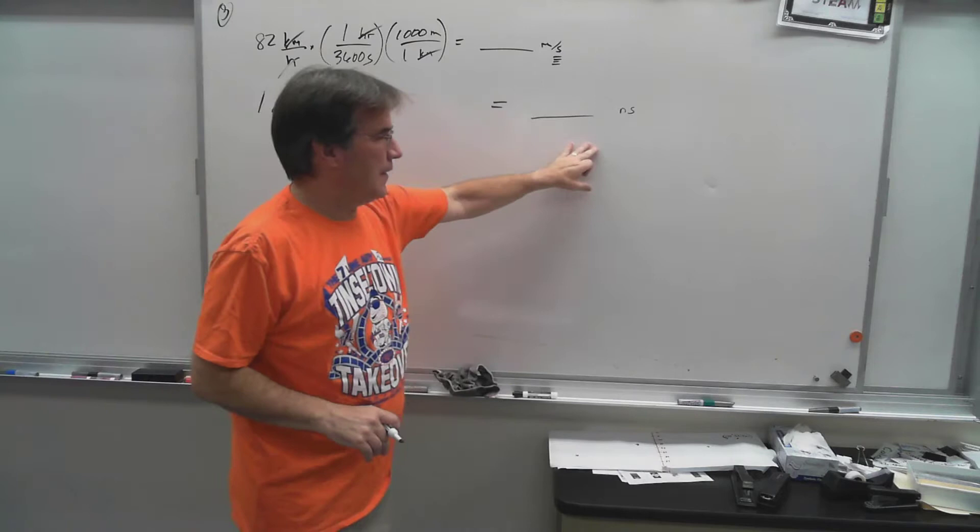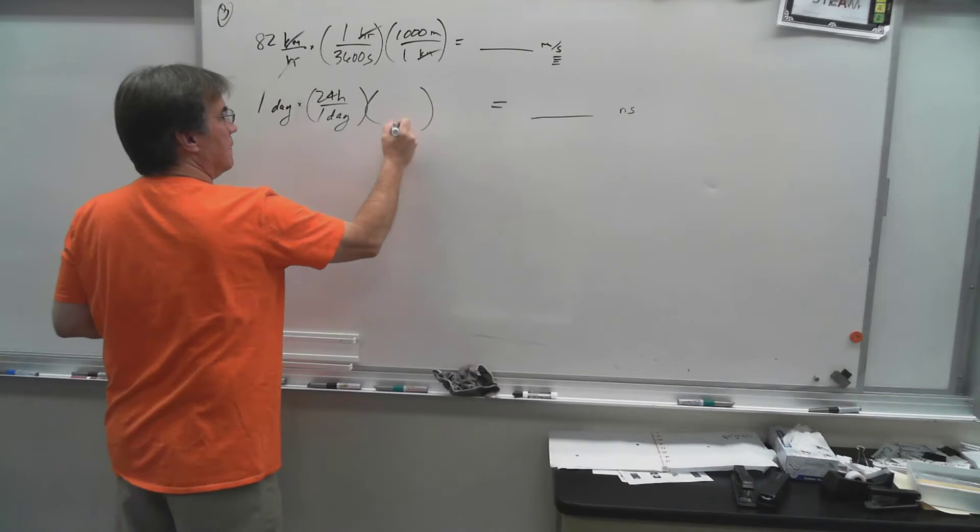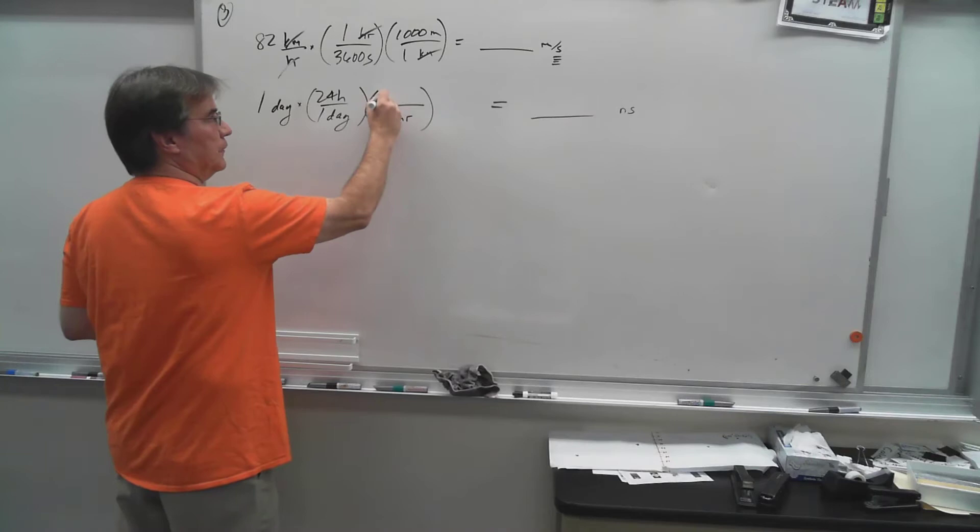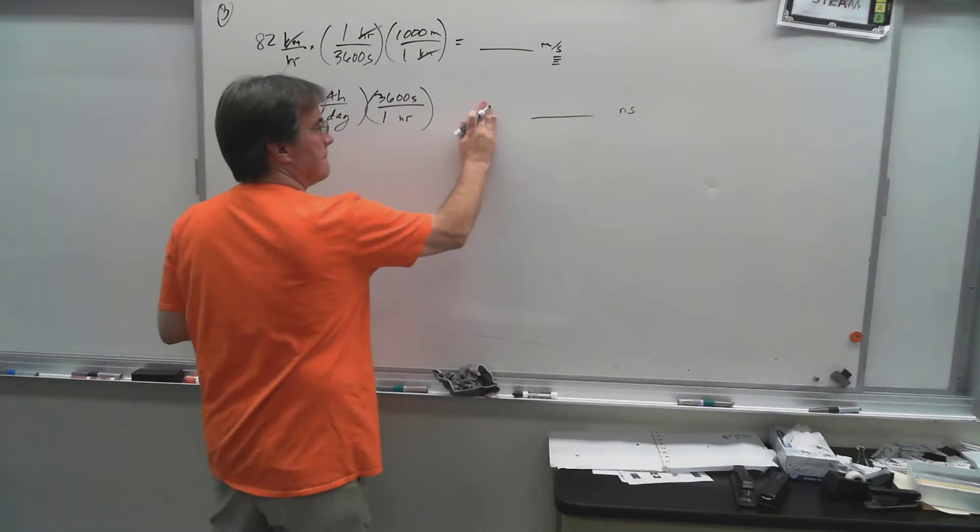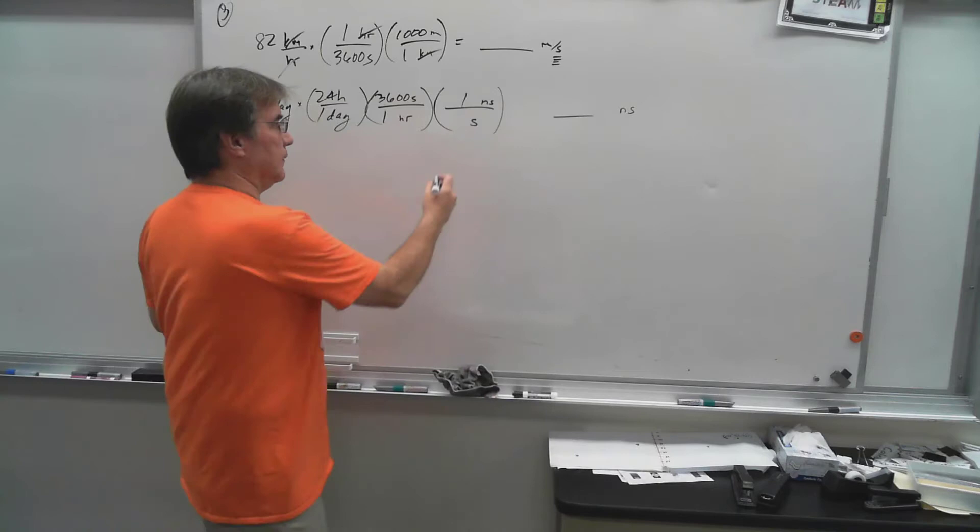Taking one day all the way to nanoseconds, let's see what happens here. Okay, this one, we've got to work our way there. Well, one day is 24 hours, and one hour, now the hours on the bottom because I'm trying to get rid of it, is 3,600 seconds. So at least I'm into seconds.